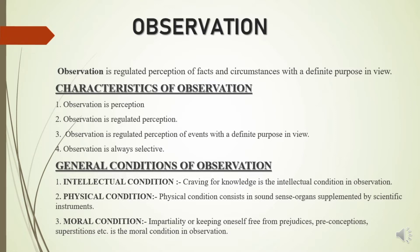Thirdly, observation is regulated perception of events with a definite purpose in view. There must be a definite purpose behind our perception, so the regulated perception with a definite purpose is called observation. Number four: observation is always selective. Although we observe various things in our daily life, we do not pay attention to all of them. The observer pays attention to significant things and aspects of things. Therefore, observation is always selective.